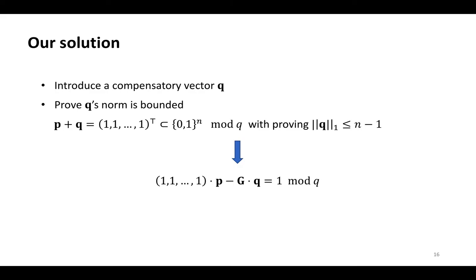Our concrete solution is like this. Introduce a composite vector q, then prove q's norm is bounded. Immediately, introduce a composite vector q such that the sum of p and q is equal to a vector with each entry being 1. Then prove its ℓ₁ norm is not greater than n-1. Further, by using the technologies for proving inequality relations in the lattice setting, we can transform it into the final solution, where G is a public matrix dependent on n-1. This provides our solution.